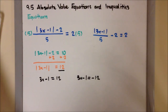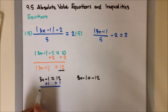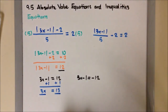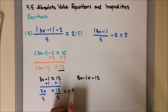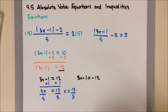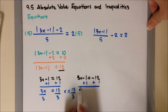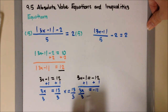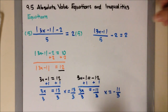Alright, time to solve for x. For the first equation, I'm going to cancel out the minus 1 by adding 1 to both sides, giving 3x equals 12 plus 1, which is 13. Then I divide both sides by 3, so x equals 13 over 3, and there's nothing to simplify. For the second equation, I add 1 to both sides as well: 3x equals negative 12 plus 1, which is negative 11. Dividing both sides by 3 gives x equals negative 11 over 3, and there's nothing to simplify.